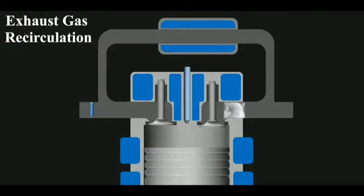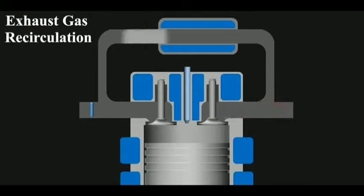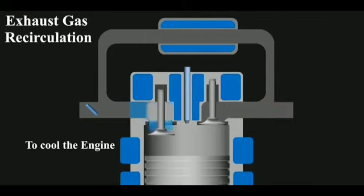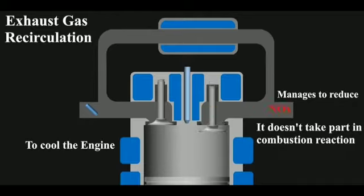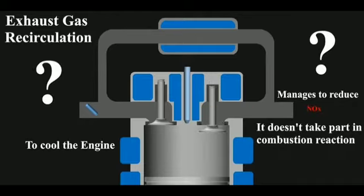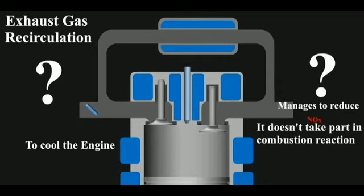Here we will see in more detail. The exhaust gas goes out of the exhaust port; some part of it goes towards the exhaust manifold and some part is recirculated. In between, a heat exchanger is provided which reduces the temperature of the exhaust gas.